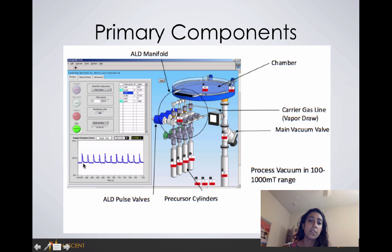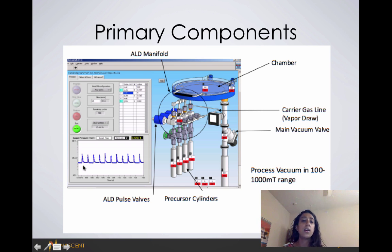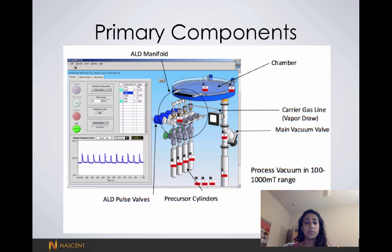As you can see here, we are pulsing some sort of oxide. This first peak is one pulse of a reactant, and the second peak is the first pulse of the second reactant.